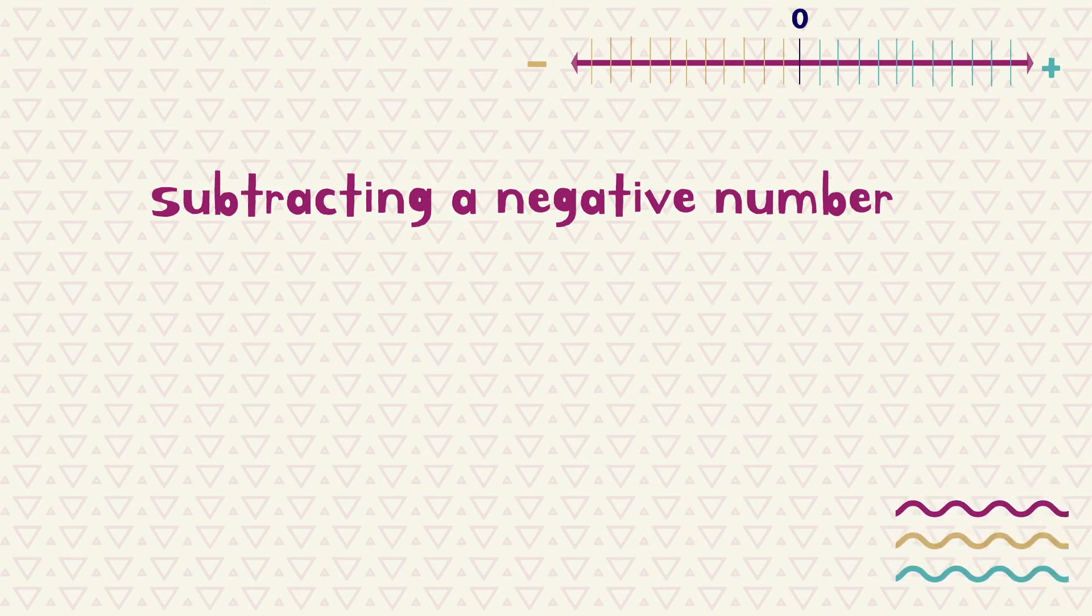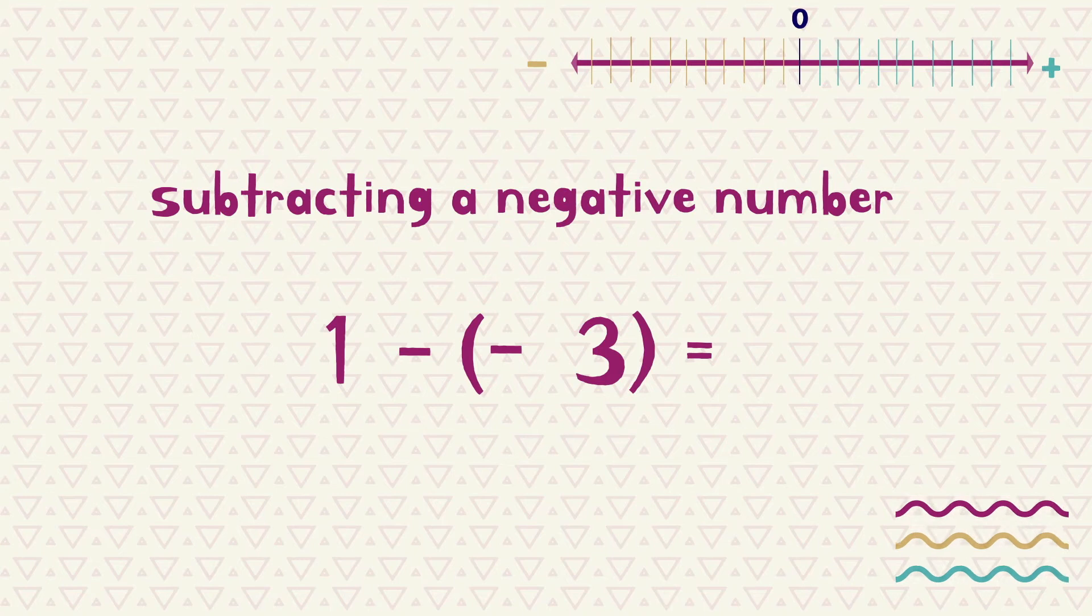Now let's look at subtracting a negative number. Here we are subtracting a negative 3 from the number 1. The rule is, if you are subtracting a negative number, you are actually just adding. So you can change the two signs to an addition sign.